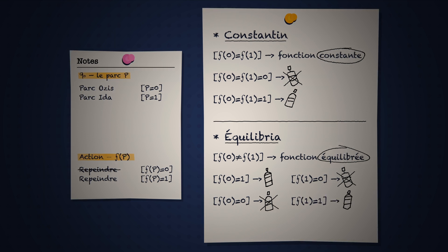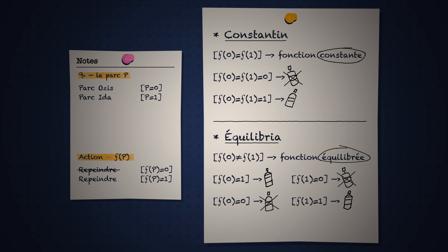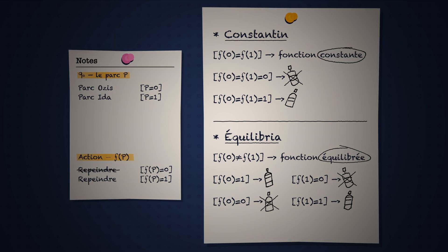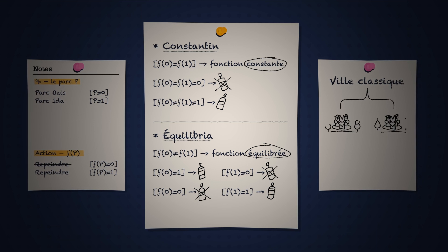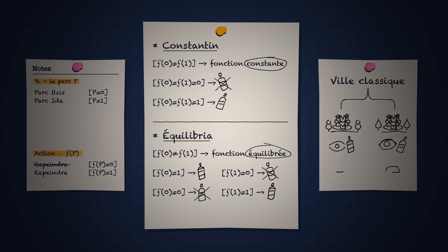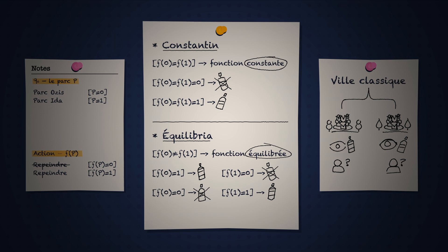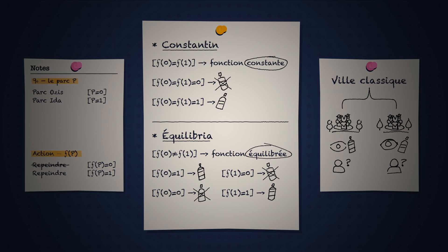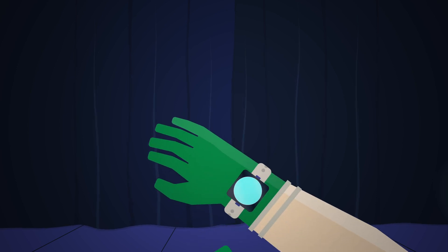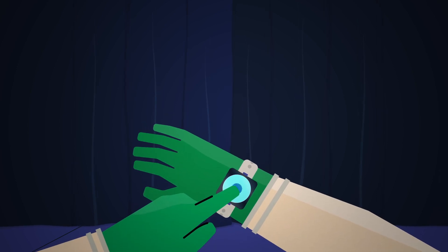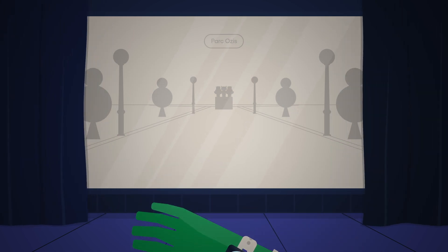Pour résoudre la situation, vous devez déterminer si la fonction est constante ou équilibrée. Dans une ville classique, vous devriez vous rendre à chacune des deux statues pour voir s'il y a de la peinture fraîche. Mais dans la ville que vous contrôlez, vous avez un avantage quantique. Vous pouvez déduire lequel des deux vandales a agi en observant qu'un seul parc. C'est la mesure du système quantique.